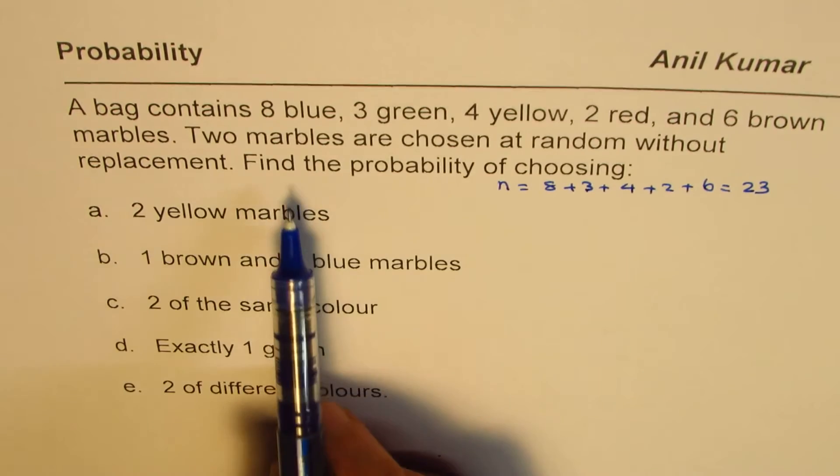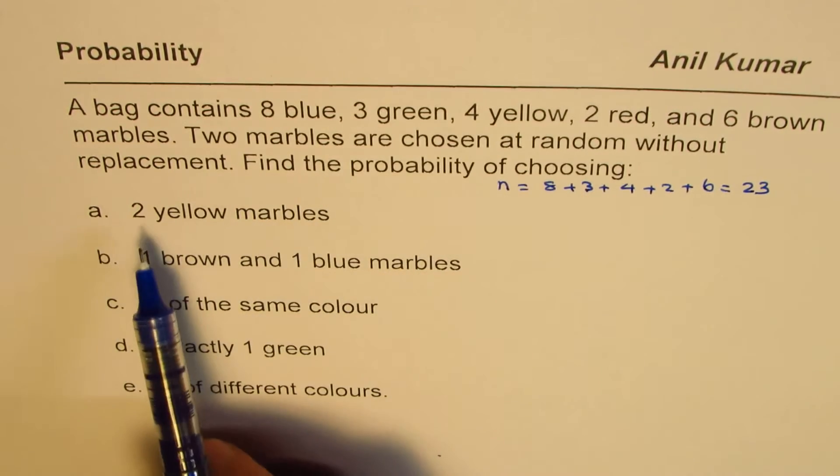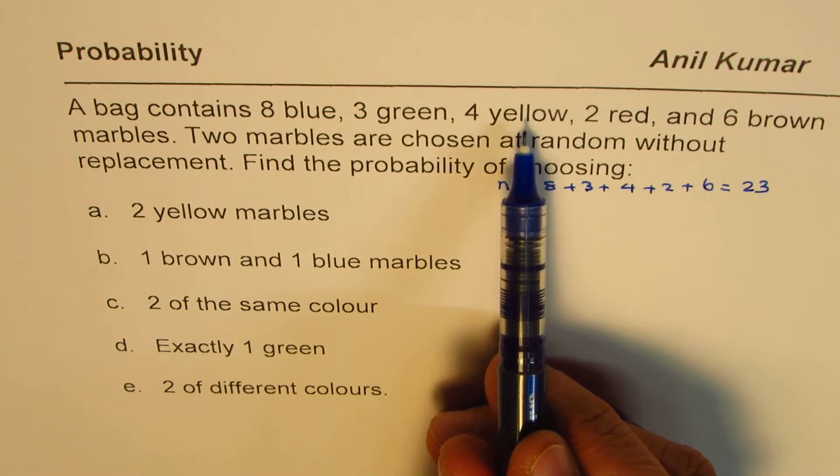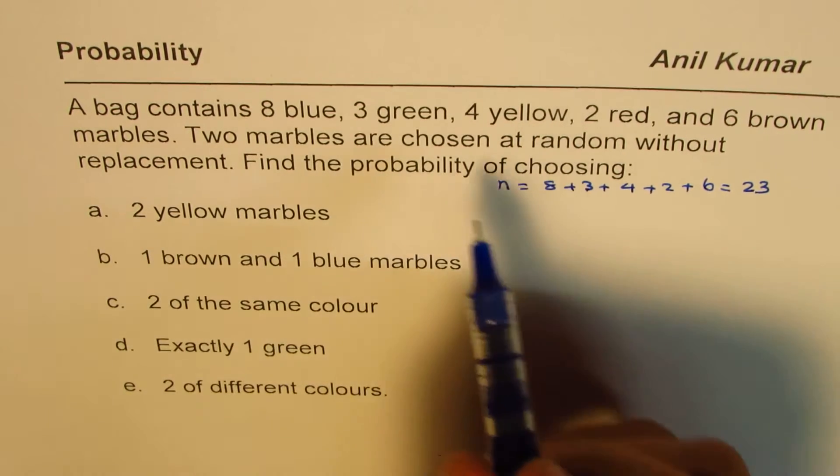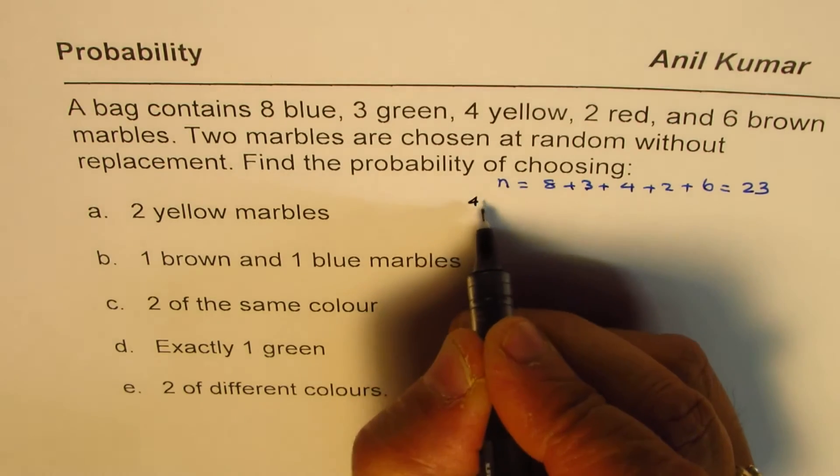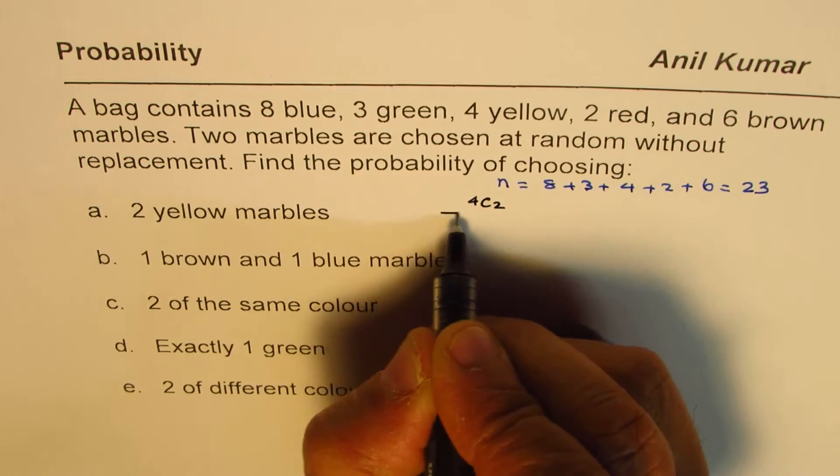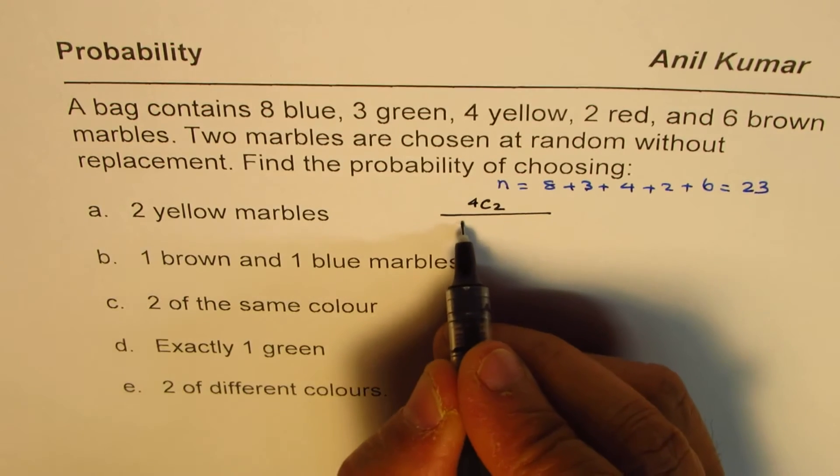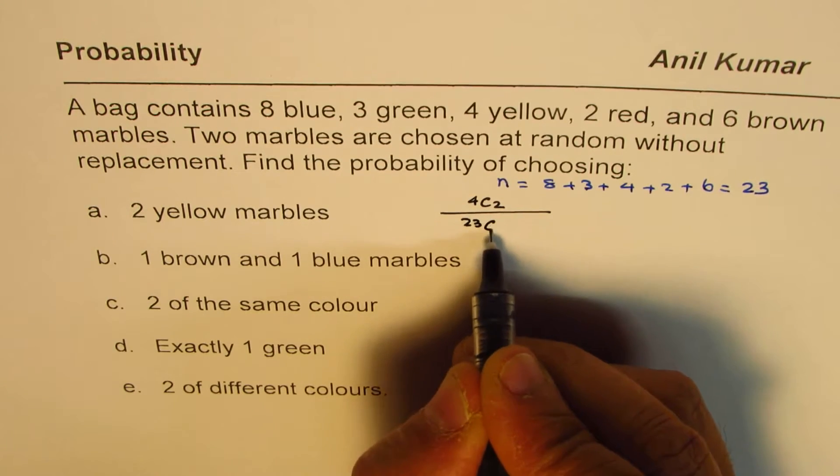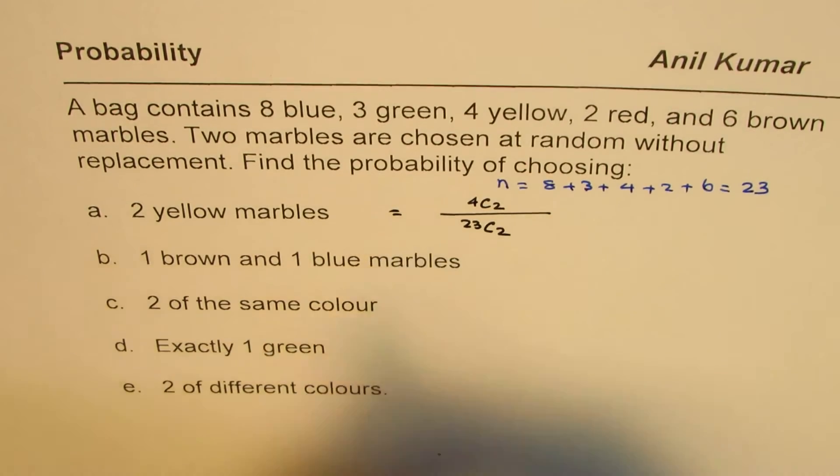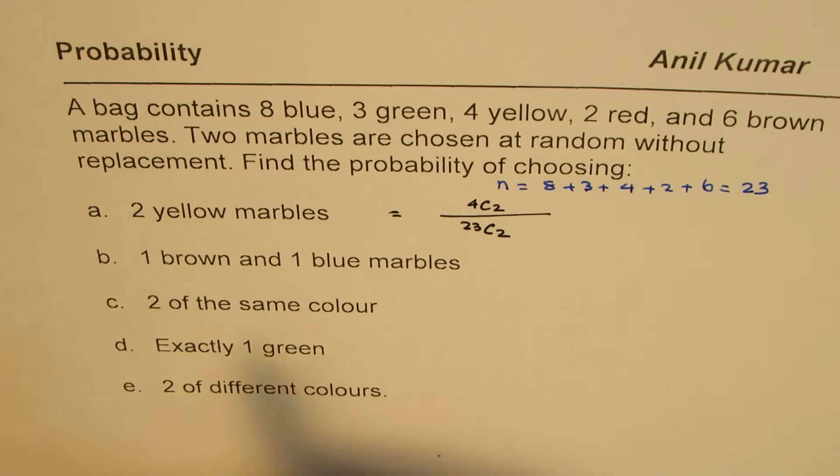So we need to find probabilities for choosing 2 yellow marbles. There are 4 yellow marbles, out of which we choose 2. So that means it is, let me write with a different ink, 4C2. So it is 4C2 over, what is the total combination? So 23 is total number of marbles. So from 23, we have to choose 2. So this ratio is what we are looking for in the first case.